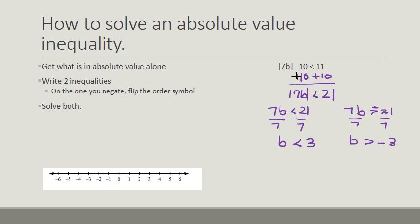When I go to graph this, b is greater than negative 3 is going to be everything going in that direction, and b is less than 3 is going to be everything here. Our solution is where they overlap — everything in between, which is where they overlap.